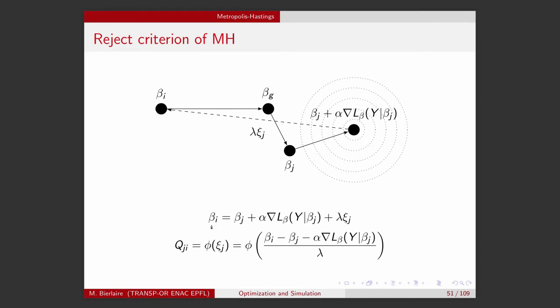So let's try the equation of this. So beta_i is obtained by starting from this point, which is this one, and moving with a step lambda along the generated xi.